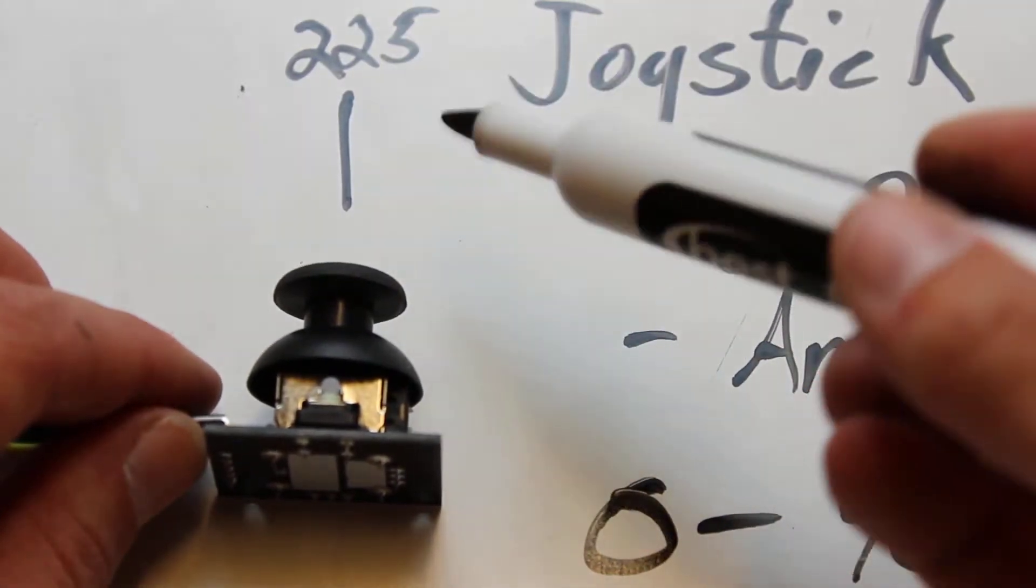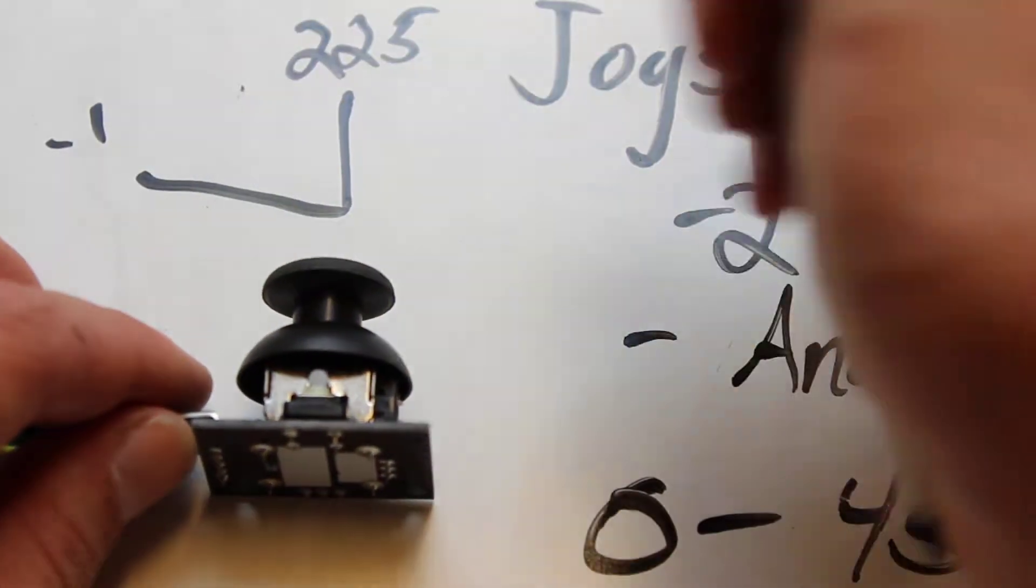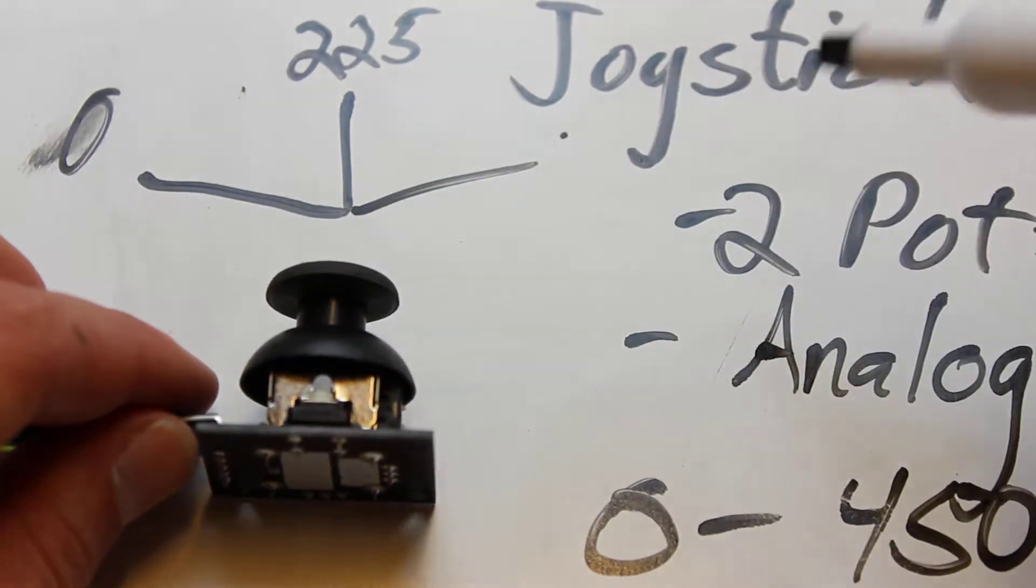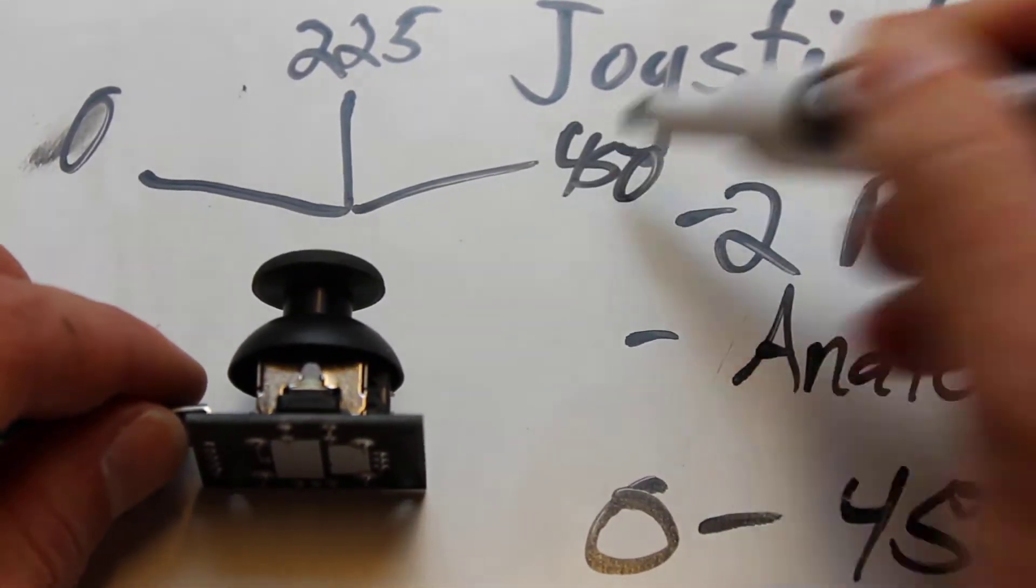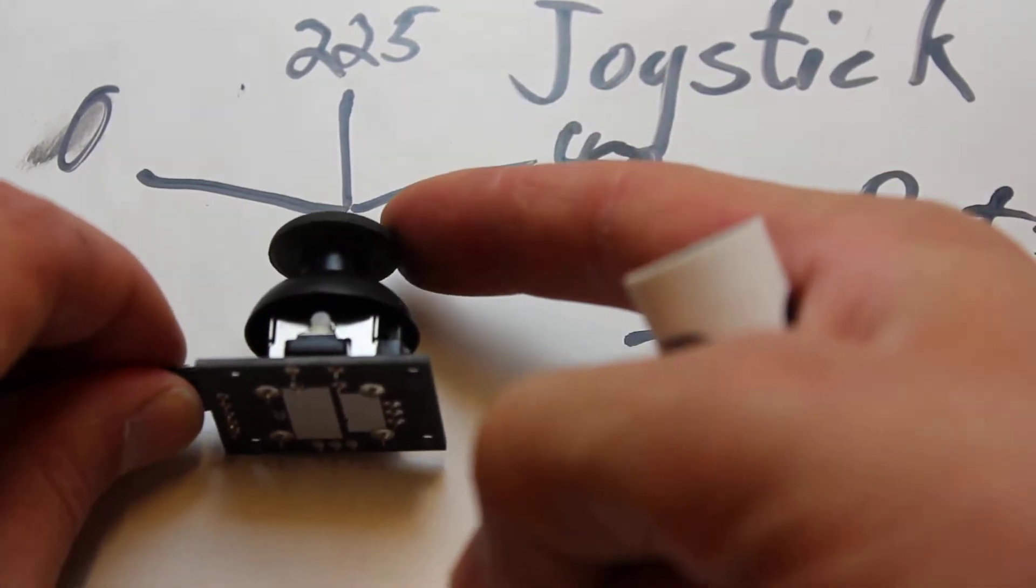Either adjust it by subtracting 225 so that up and down is 0 and then back here is negative. Otherwise, you're going to have this as 0, backwards as 0, forwards as 450. So, 450, 225, 0.